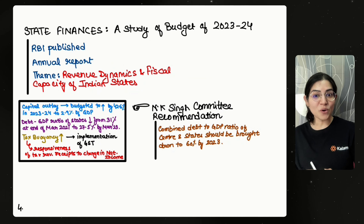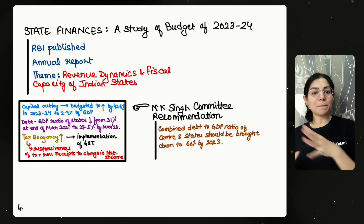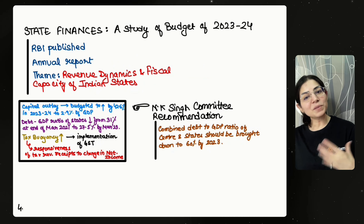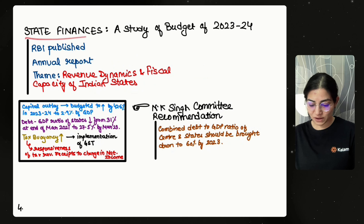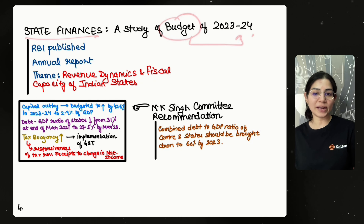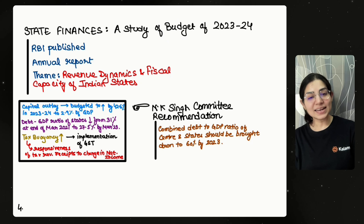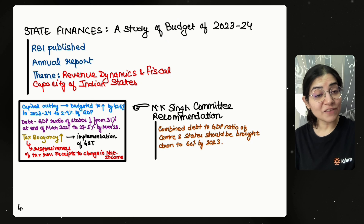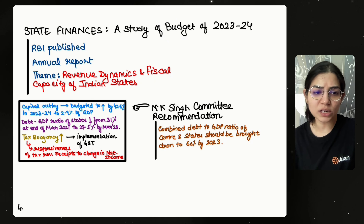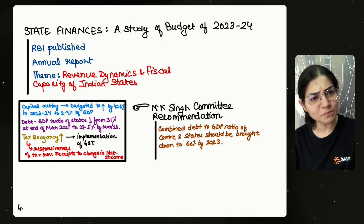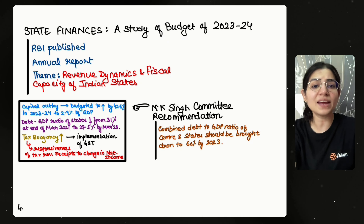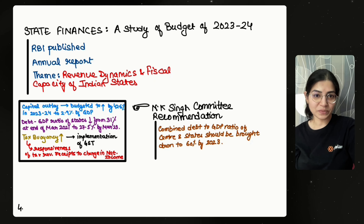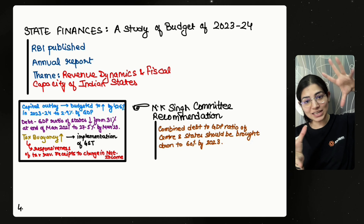The next important topic comes from the budget. RBI has published its report known as 'State Finances: A Study of Budgets 2023-24.' Several things have been highlighted about the interim budget that was announced this year due to elections. RBI publishes this annual report every year to analyze the budget — whether it is an interim or normal budget. The theme of this year's report is 'Revenue Dynamics and Fiscal Capacity of Indian States,' covering how revenue sharing is done between the central and state governments, including N.K. Singh Committee recommendations.